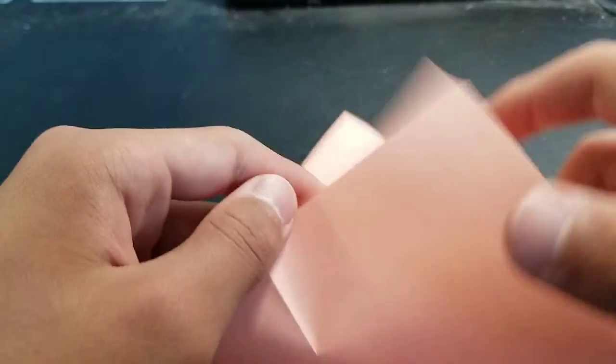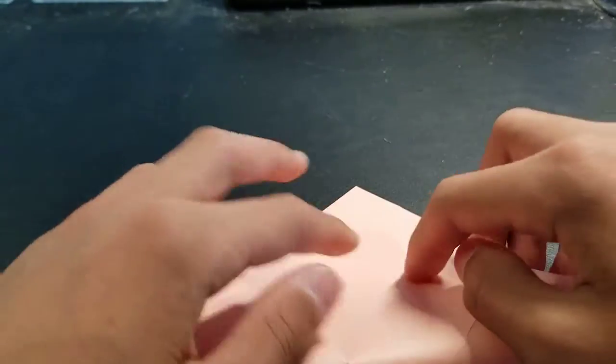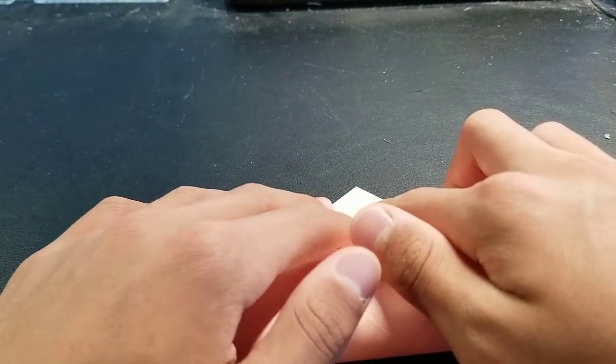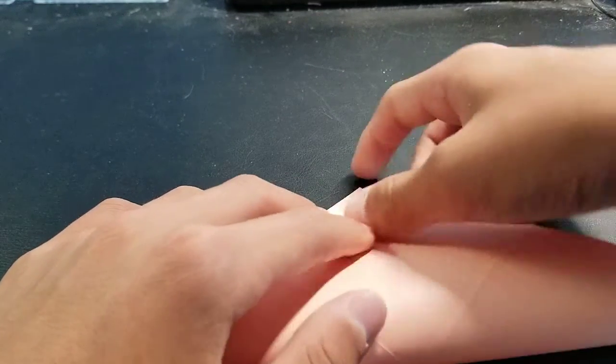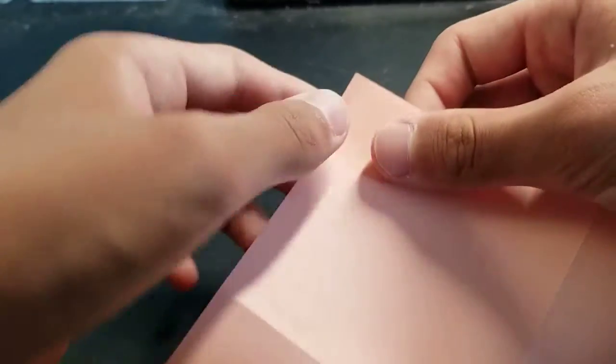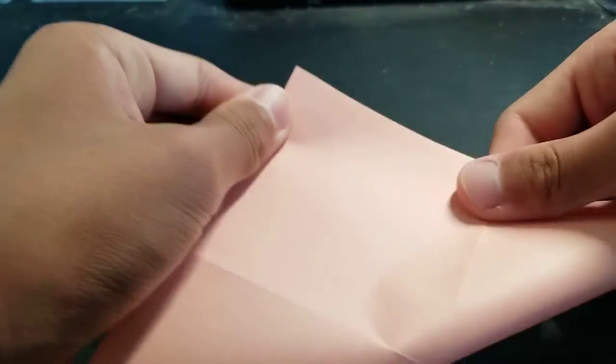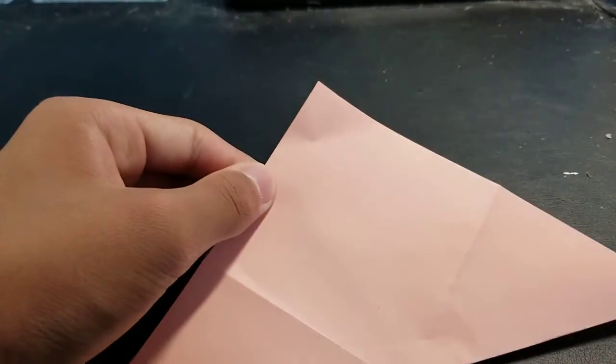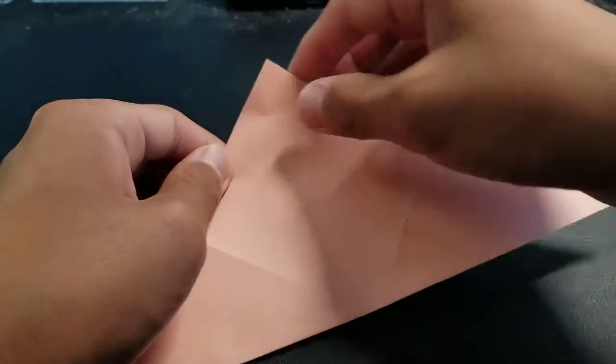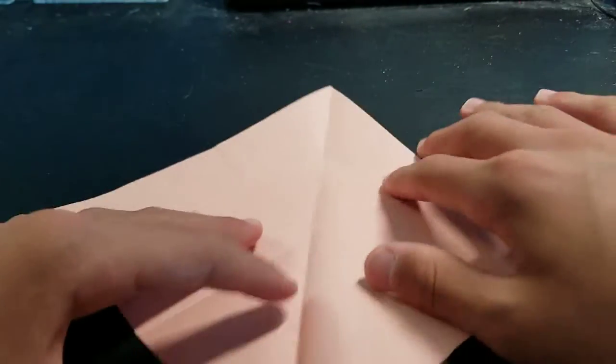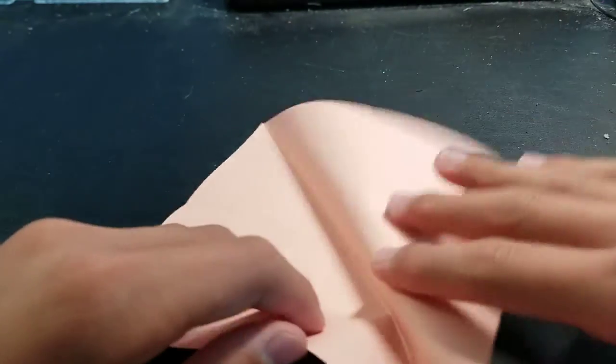Unfold it, and fold this corner to the opposite corner. It's kind of hard to see. Now unfold it, and then fold this corner to that corner.